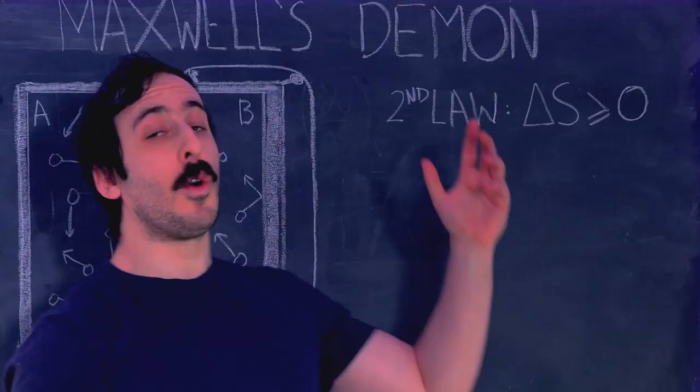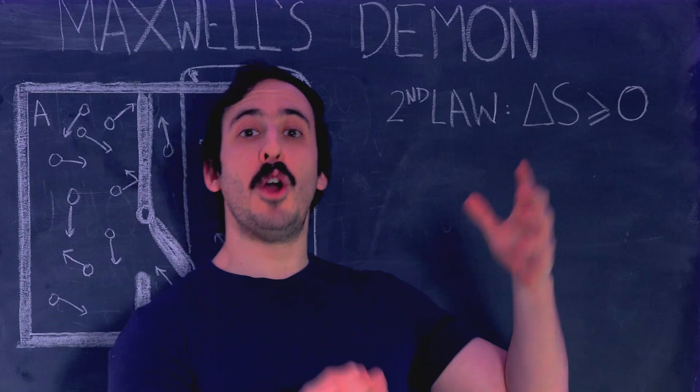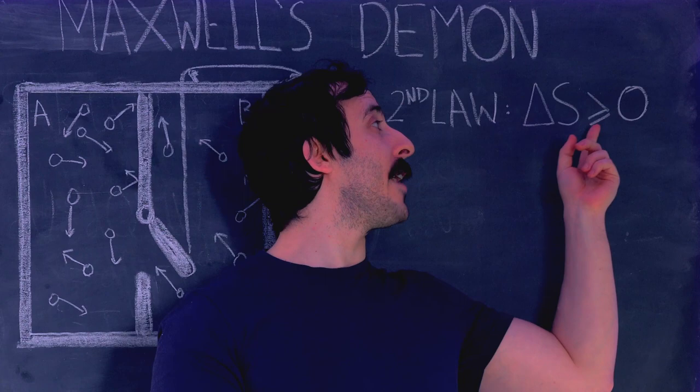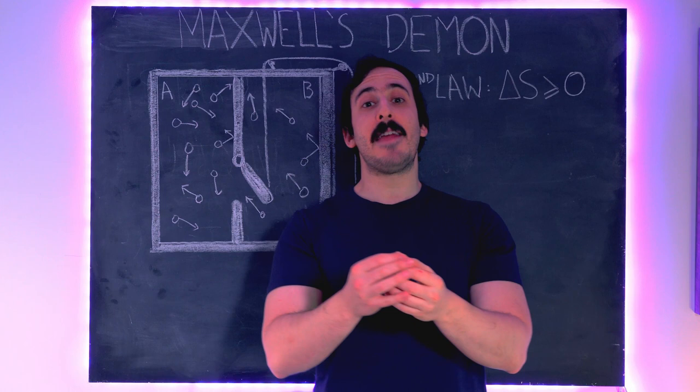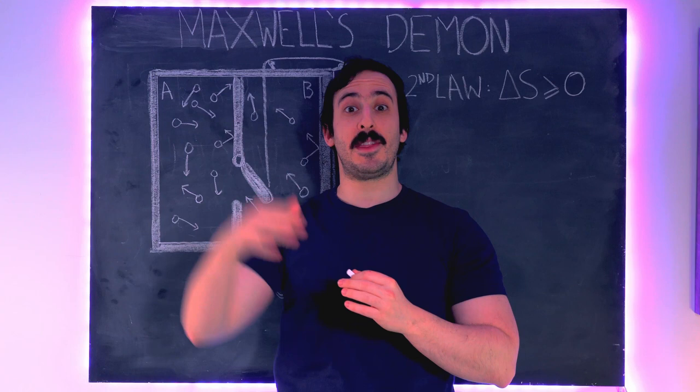The second law of thermodynamics states that for a thermally isolated system, for a system sealed off from anything else, entropy over time will always increase. So delta S, the change in entropy, is greater than or equal to zero. We always move from a low entropy state to a high entropy state and never see a fall in entropy. We'll reach some maximum entropy and stay there.